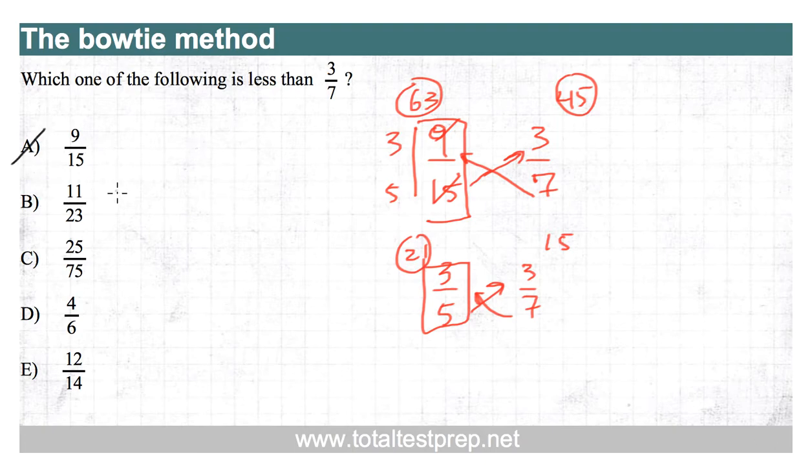Let's compare 11 twenty-thirds and three-sevenths. So I'll put three-sevenths over here. Again, we multiply diagonally. 23 times three is 69. Seven times 11 is 77. 77 is bigger than 69, which means this fraction is bigger than three-sevenths. So that's out.